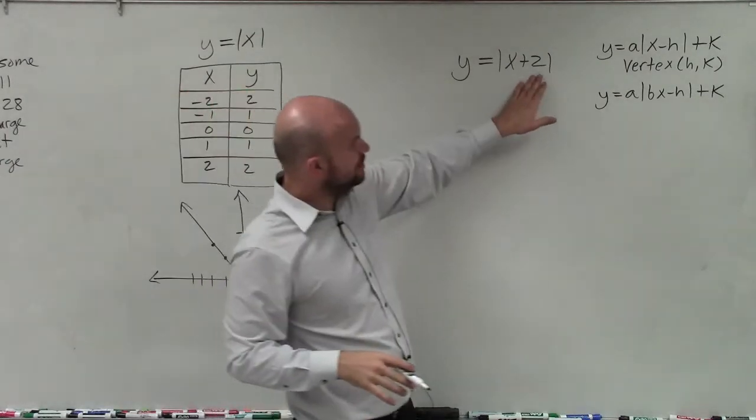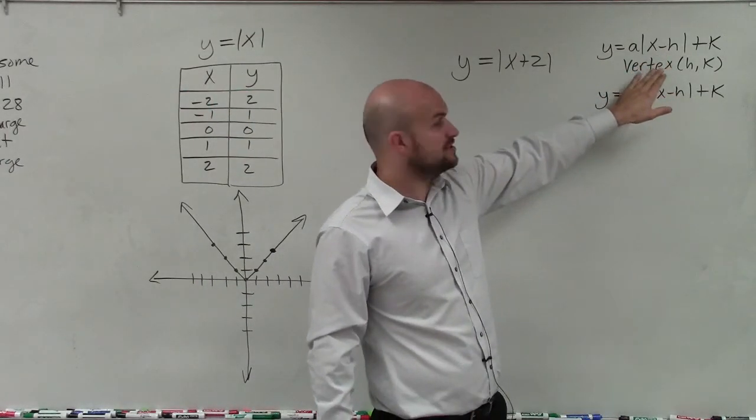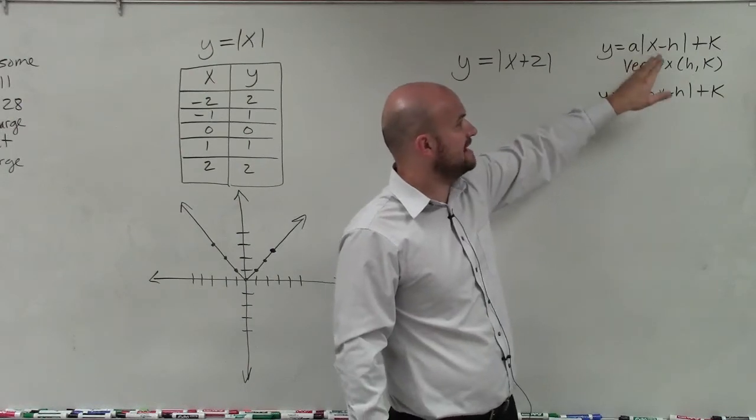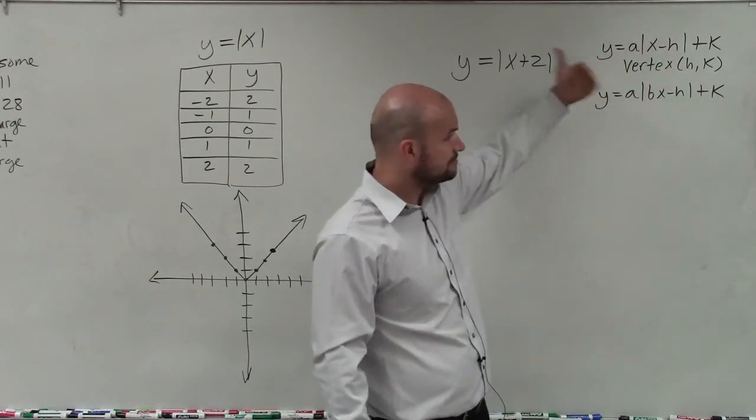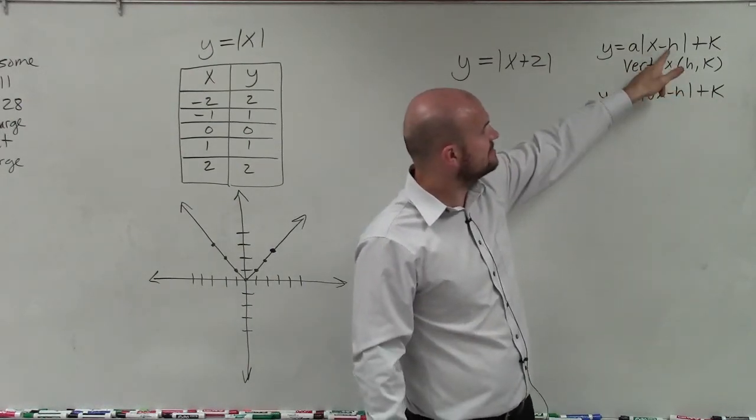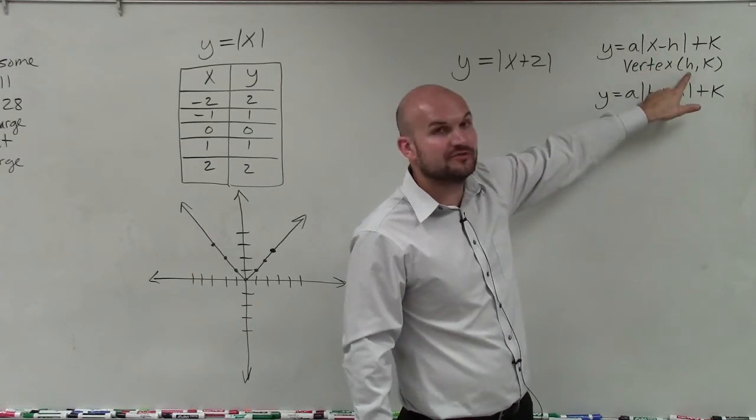But by adding 2, you can see what my transformation form is: y equals a times absolute value of x minus h. So whatever your value of h is, that's your new value of your vertex.